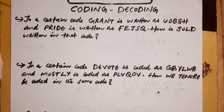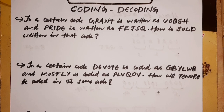First question: In a certain code, GRANT is written as UOBSH and PRIDE is written as FEJSQ. How is SOLD written in that code?